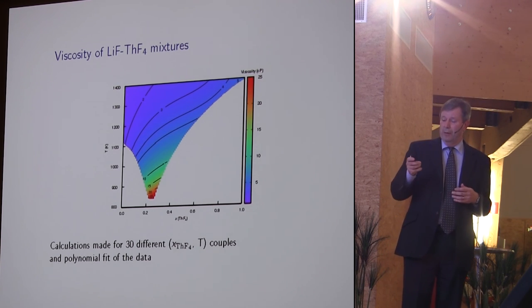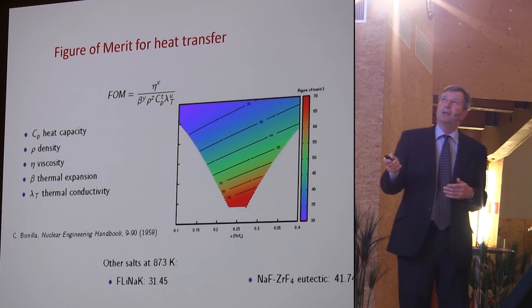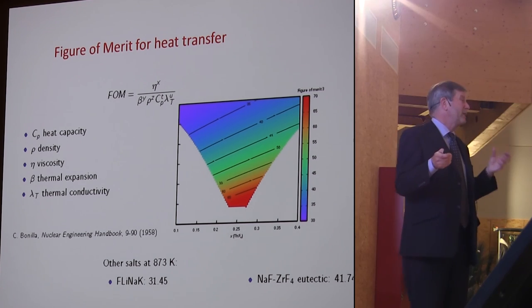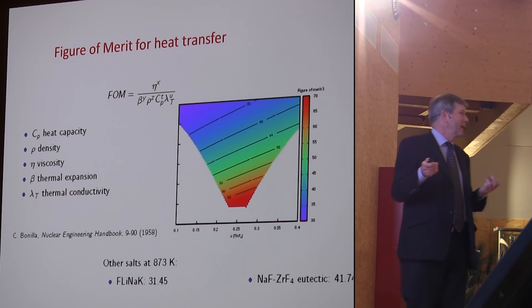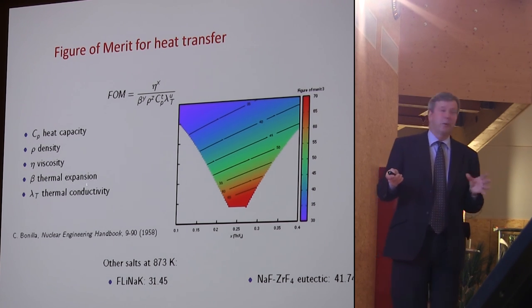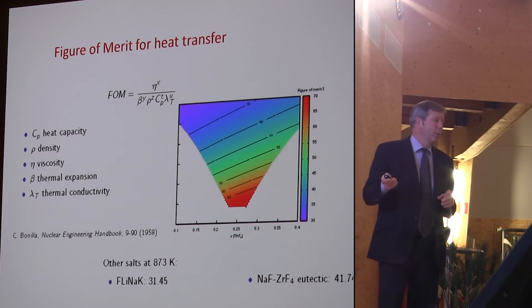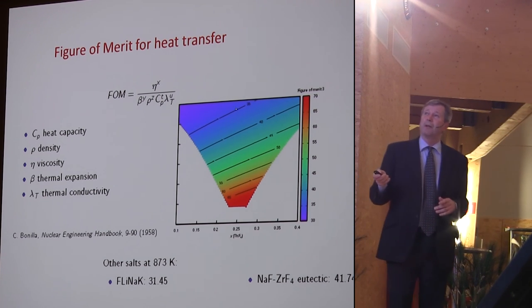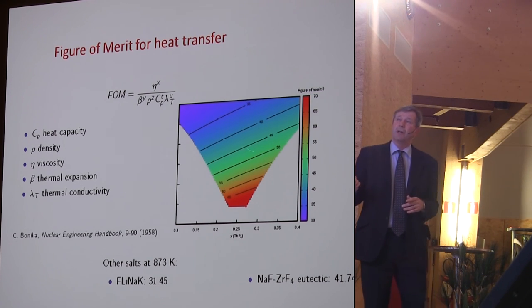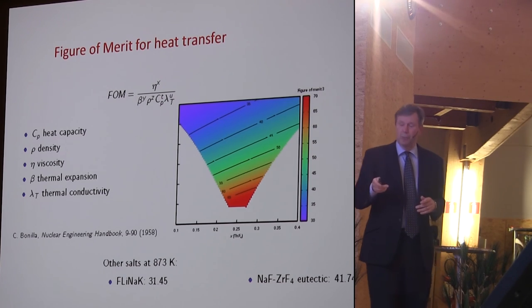You can also look at this figure of merit for heat transfer which involves a combination of heat capacities, densities, viscosities, thermal expansion coefficients, and thermal conductivity. The thermal conductivity is an interesting property because it's really hard to measure it in a molten salt because of the high temperatures, because of convection. Our predictions may well be more reliable than any experimental values. These are scanning out the figure of merit for heat transfer in laminar flow across this full composition range.